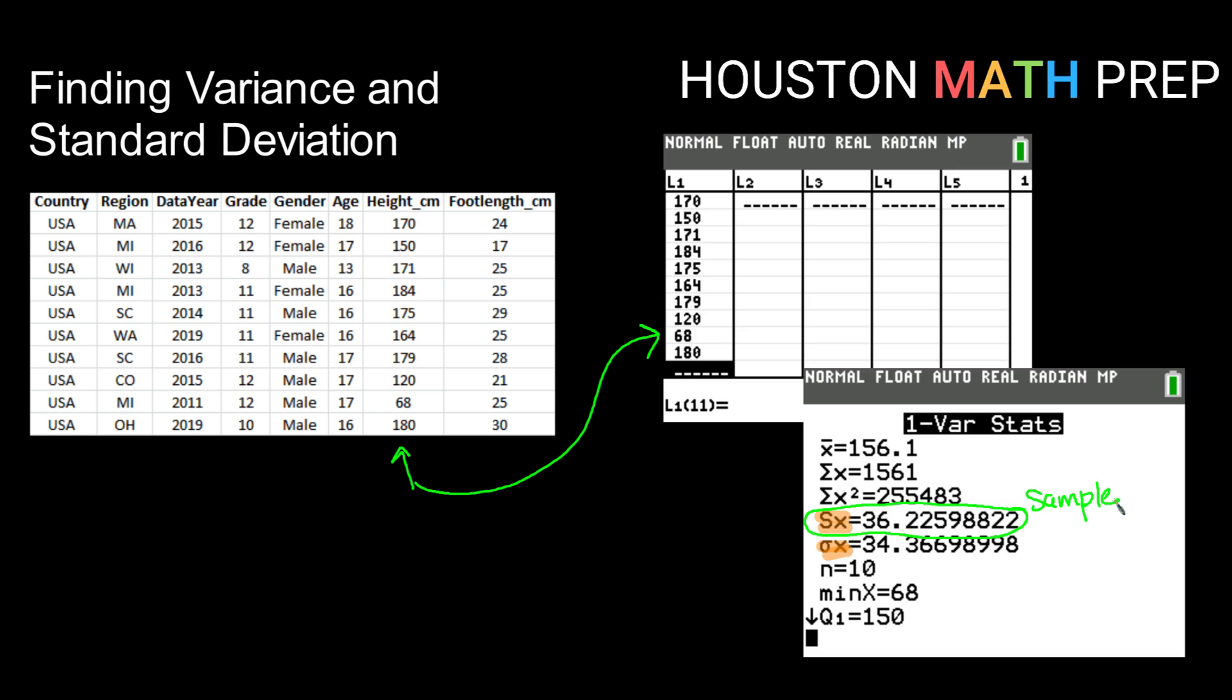Notice though that on the readout, we are not shown our variance. Remember that variance is s squared. So the calculator doesn't directly give you that.